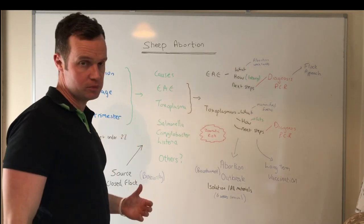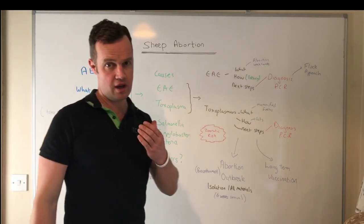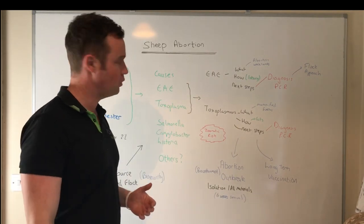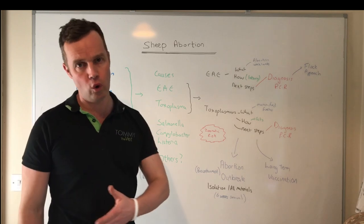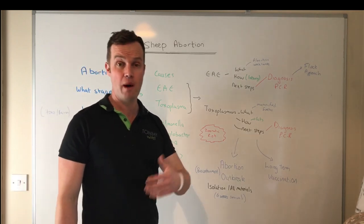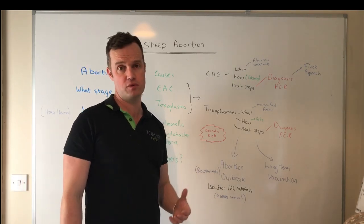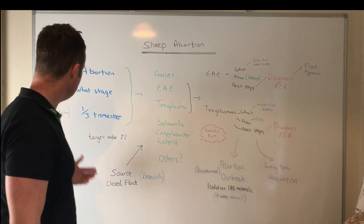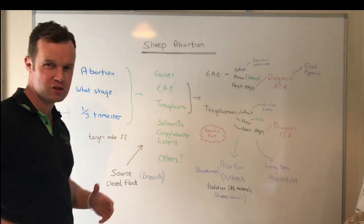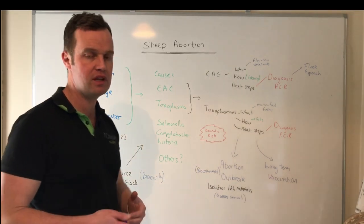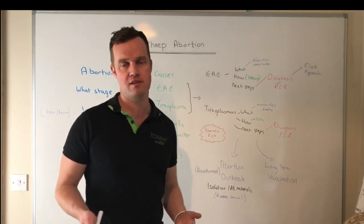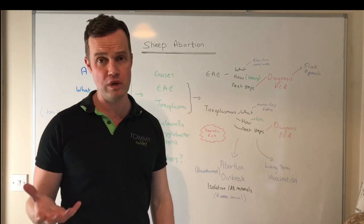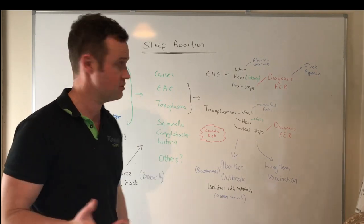Sheep abortion is something we deal with a lot in our flocks. It's a common problem and we can range from low levels to abortion storms which are catastrophic for a flock and herd owner. If we typically look at abortion, we think about lamb losses - in the last trimester we see dead lambs, or sometimes weak or stillborn lambs.